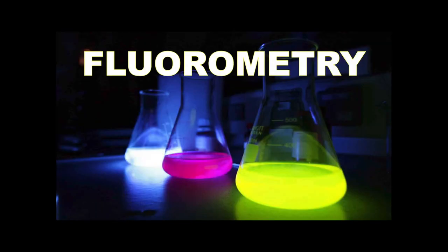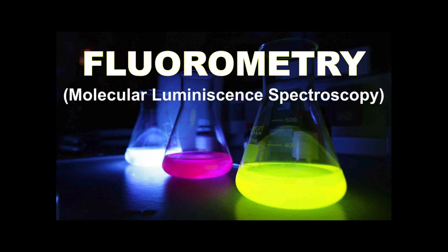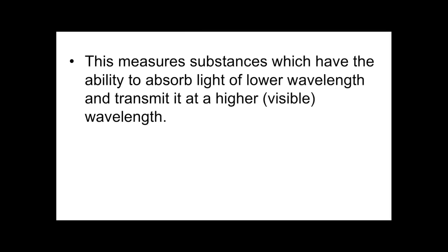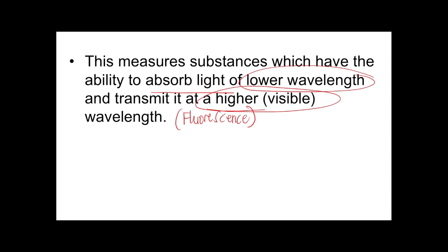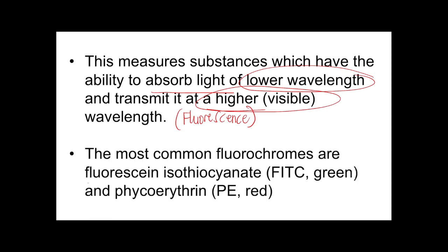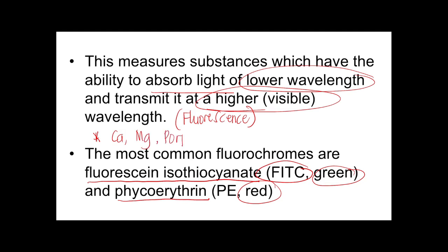The next instrument is the fluorometer, a type of molecular luminescence spectroscopy. It measures substances that absorb light at a lower wavelength and transmit it at a higher or visible wavelength — this ability is called fluorescence. We use fluorochromes to observe colors; common ones are fluorescein isothiocyanate (FITC) giving green and phycoerythrin giving red. The fluorometer is very sensitive and specific, requiring smaller samples and fewer reagents. It is used to measure calcium, magnesium, trace elements, porphyrins such as heme, and catecholamines produced by the adrenal glands.